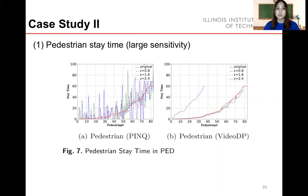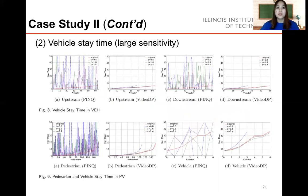The figures show how long each pedestrian stays. Compared to the PinQ platform, video DP results are less fluctuated and closer to the original results. When epsilon is larger, the results are better. We can draw similar observations for the stay time of vehicles in both moving downstream and upstream directions in traffic monitoring videos. Thus, video DP works well for both small and large sensitivity queries compared to the PinQ platform.